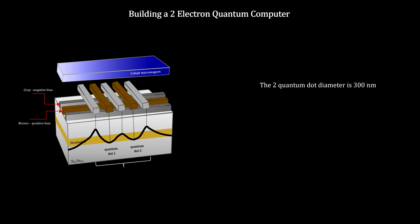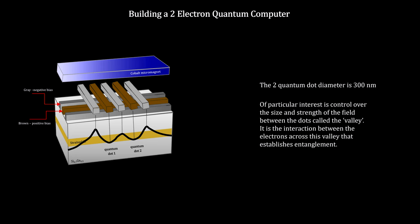On top of these two components, we add a micro-magnet to create a tapered magnetic field. This field couples electron spins to the electric field set up by the gates.